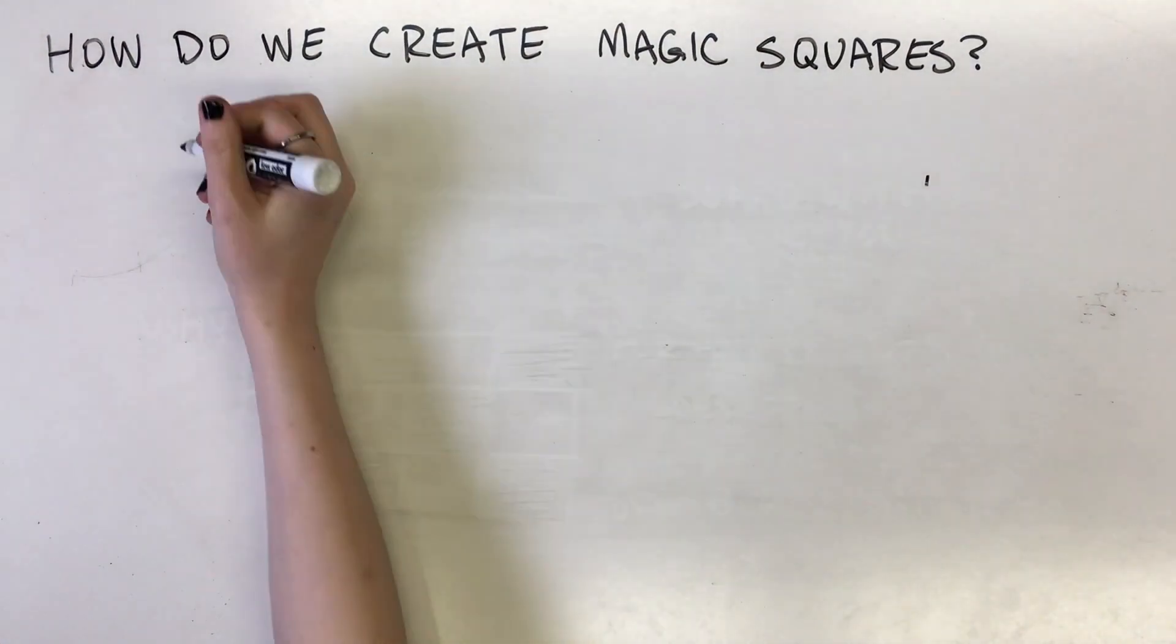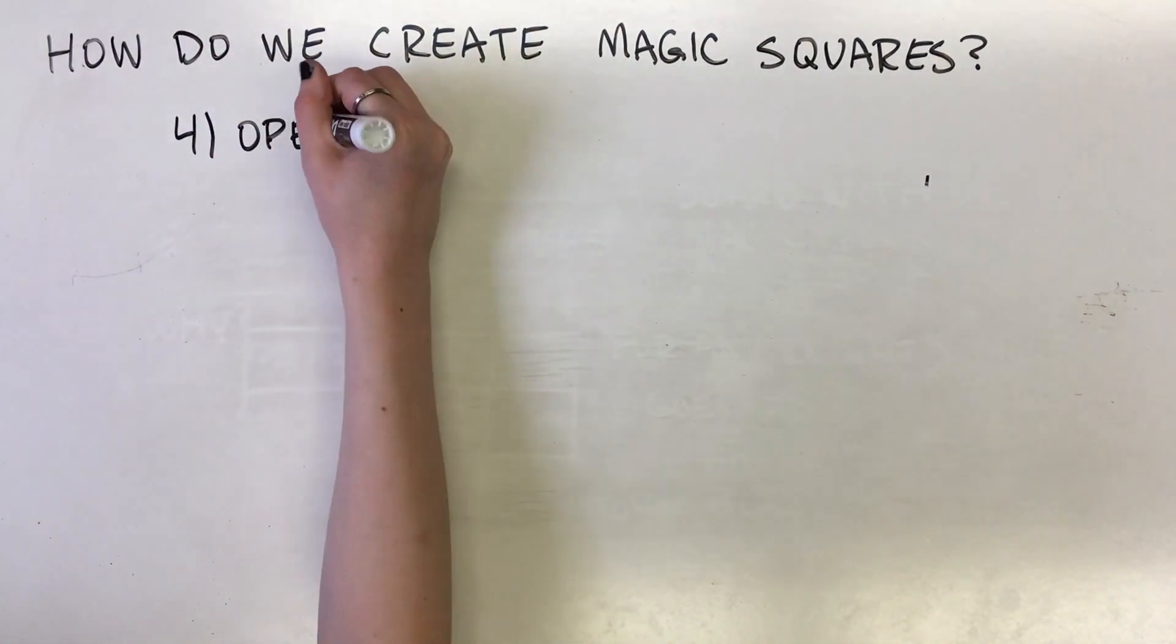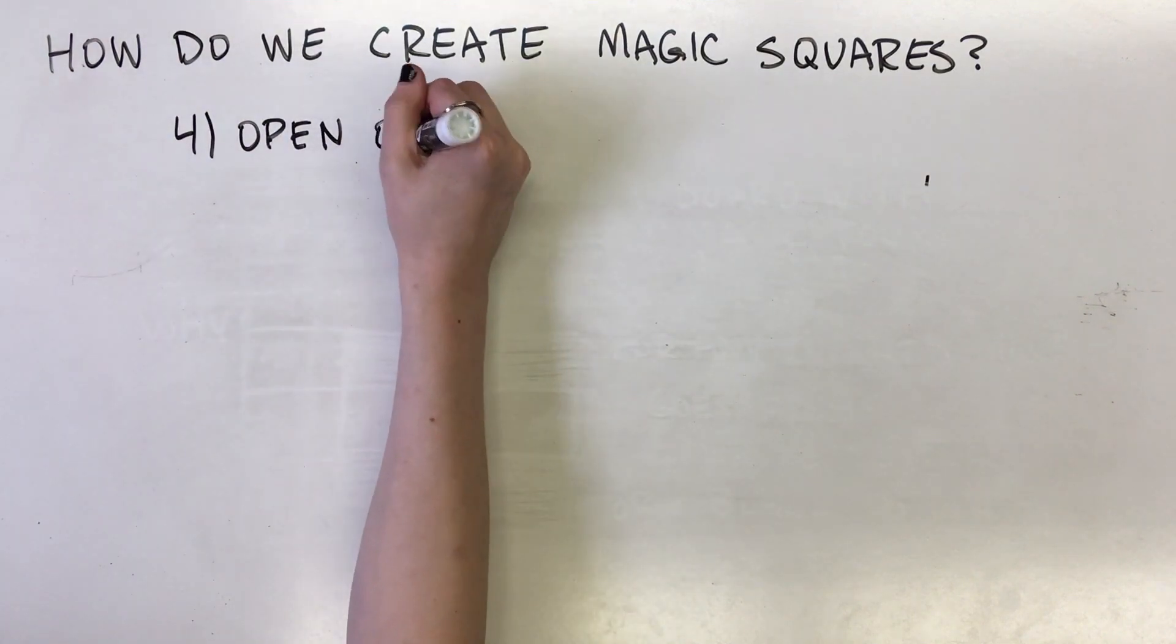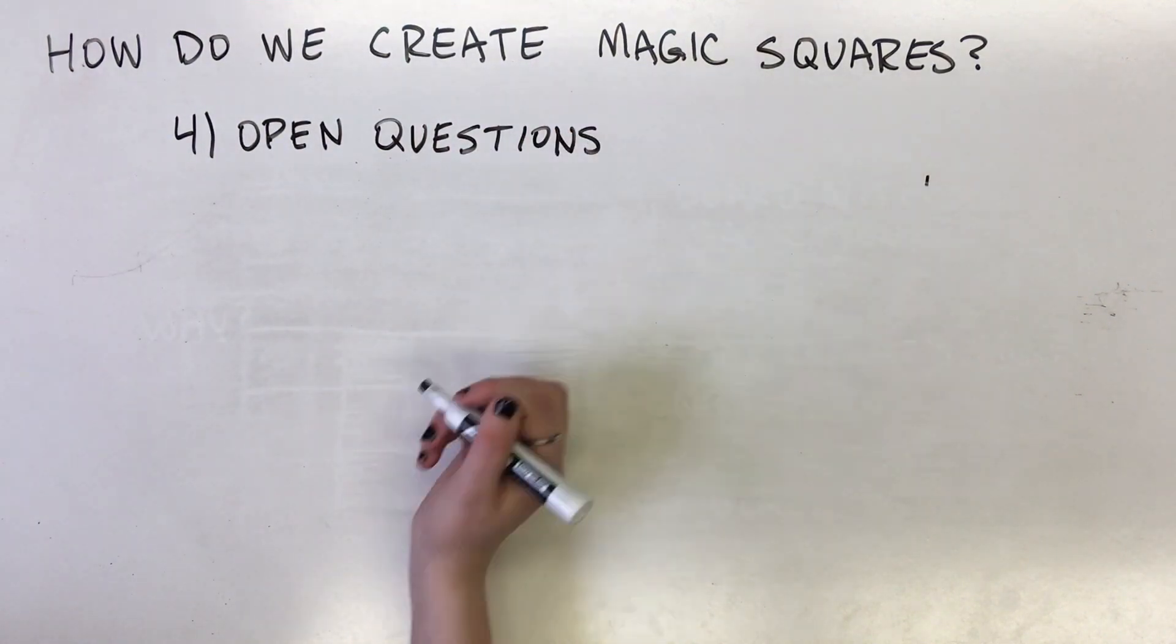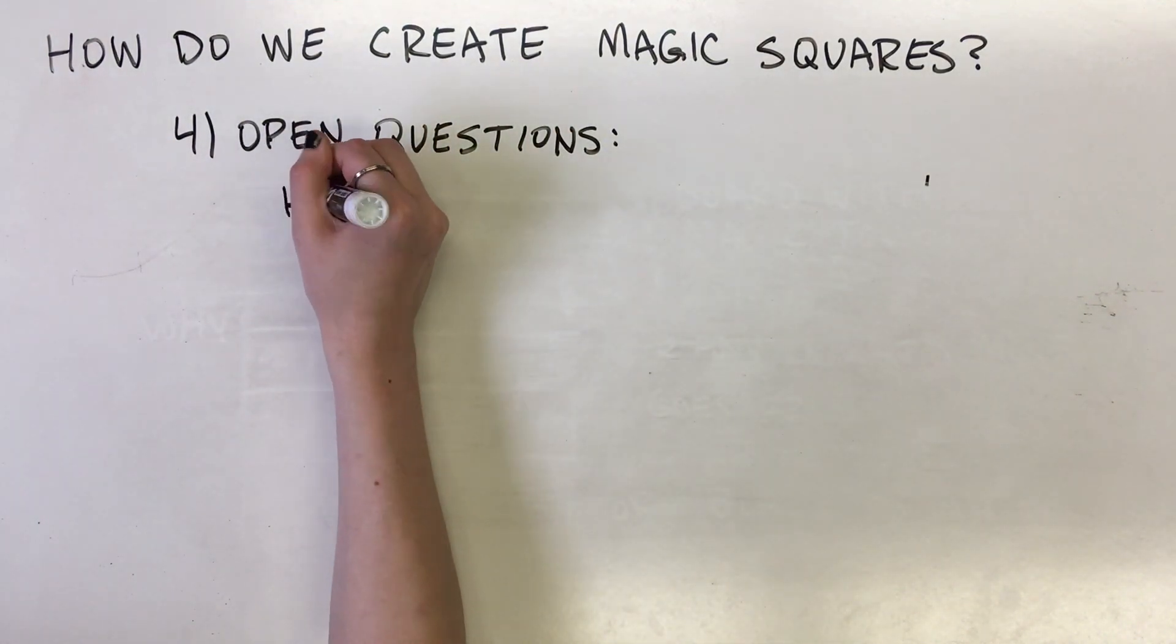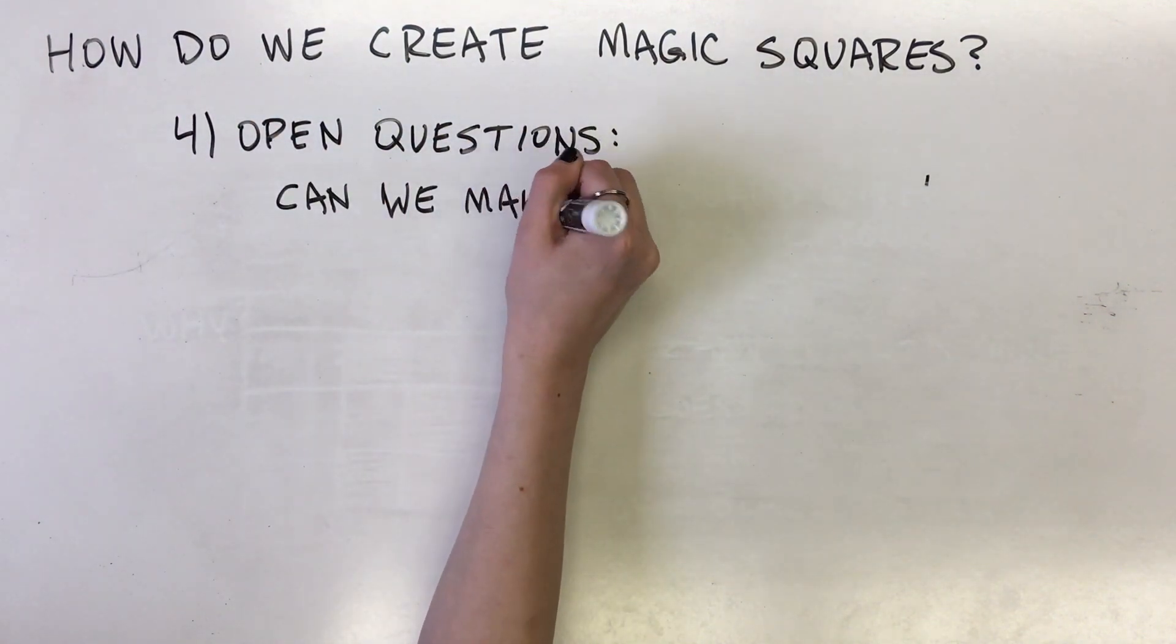A currently open conjecture with regards to magic squares is the existence of a 3x3 magic square in which the entries are perfect squares. Can a 3x3 magic square be constructed with 9 distinct perfect squares?